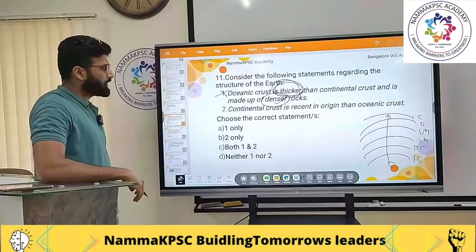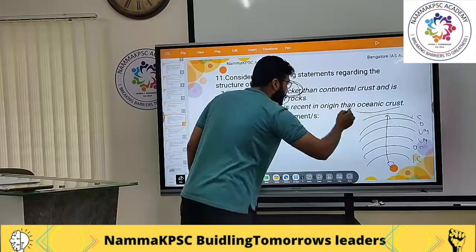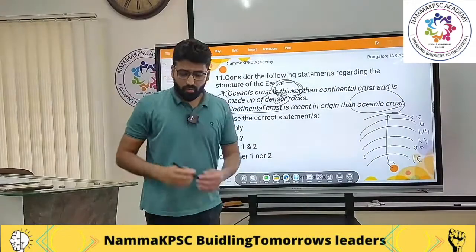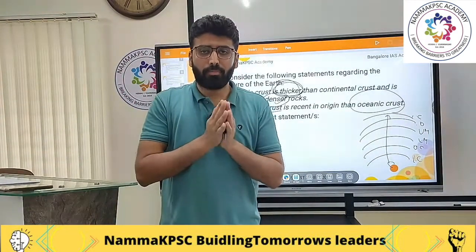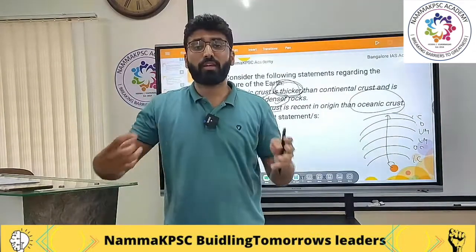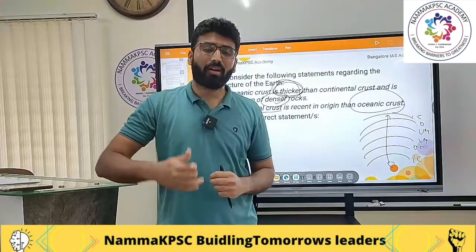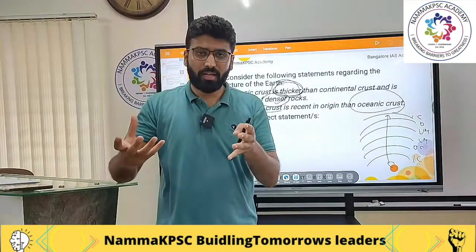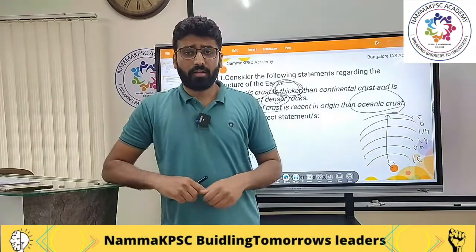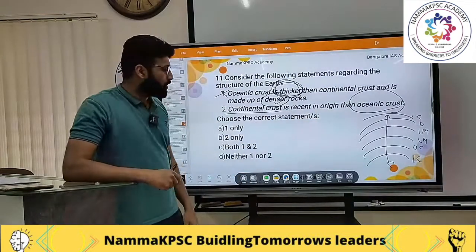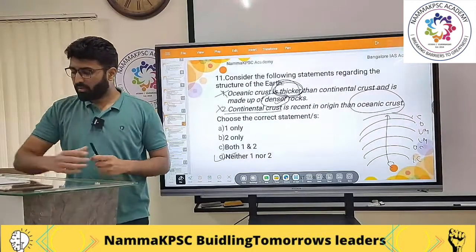Statement 2 says continental crust is more recent in origin than oceanic crust. No — oceanic crust is more recent in origin. When discussing seafloor spreading theory, along the Atlantic Ocean you have the mid-Atlantic ridge where oceanic crust is continuously forming. New oceanic crust forms while older oceanic crust is destroyed through subduction into the mantle. So this statement is also incorrect. The correct answer is neither 1 nor 2.